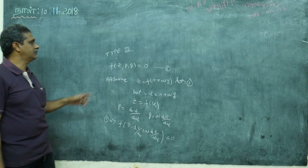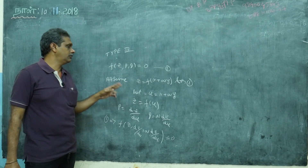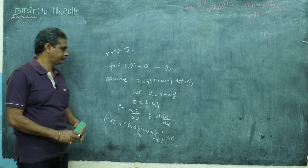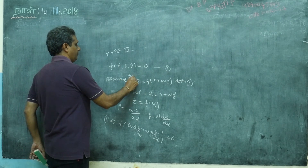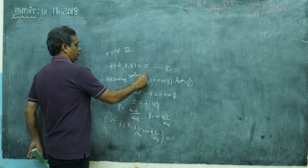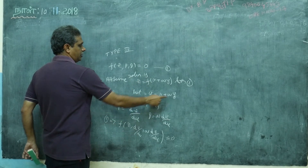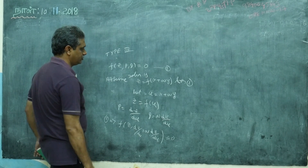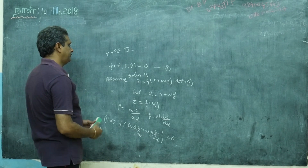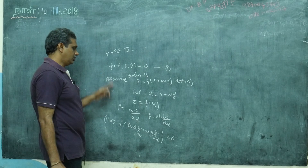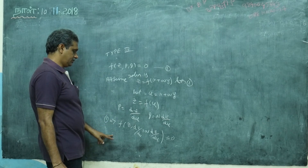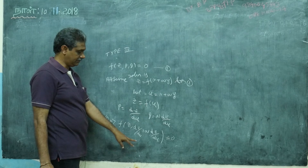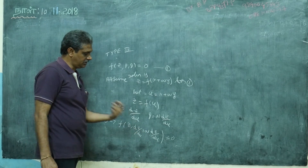So type 3 is f of z, P, Q. Assume z equals f of x plus ay as the solution, then put u equals x plus ay, z equals f of u, P equals dz/du, q equals a·dz/du. I am telling you this shape for understanding — you don't necessarily need to write all of it.